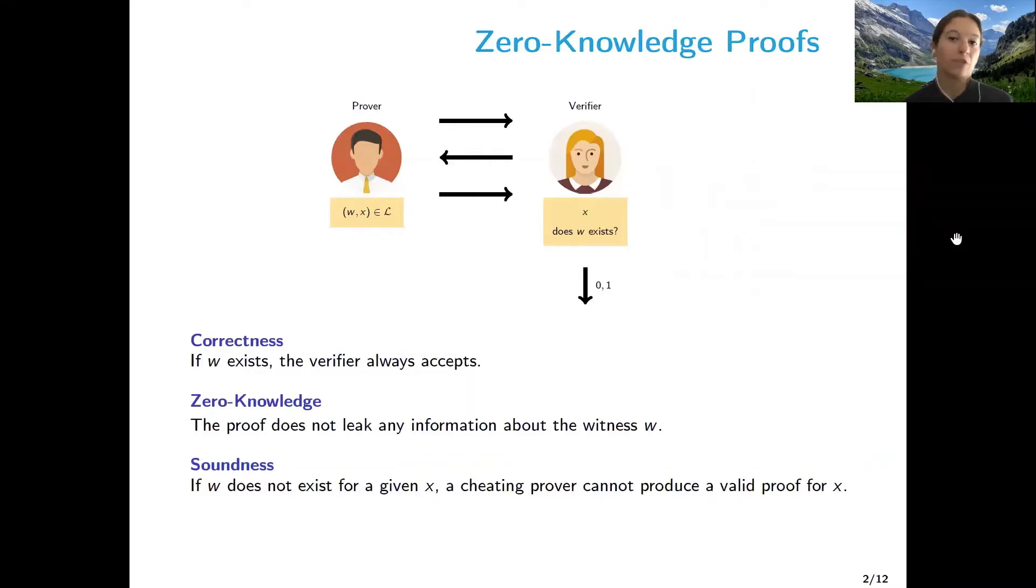And we of course require some security properties from these protocols. We want them to be correct, so if W exists and the prover knows it, then the verifier accepts. We want them to be zero knowledge, so the verifier cannot recover any information about W besides the fact that the prover knows it. And we want them to be sound to prevent a cheating prover from falsely convincing the verifier.